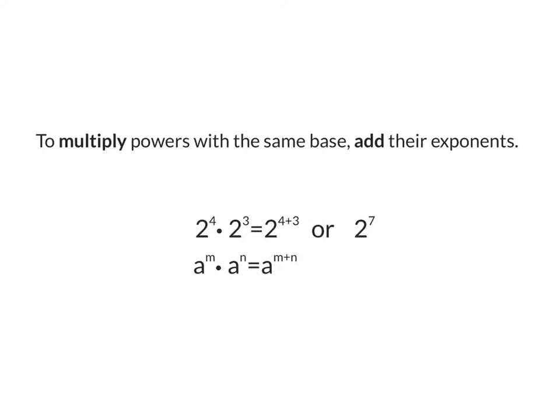To multiply powers with the same base, add their exponents. For example, 2 to the 4th power times 2 to the 3rd power — we're going to add the exponents, which is 4 plus 3, and that gives us 7, so it will be 2 to the power of 7. It also works with variables: a to the n power times a to the m power equals a to the power of m plus n.